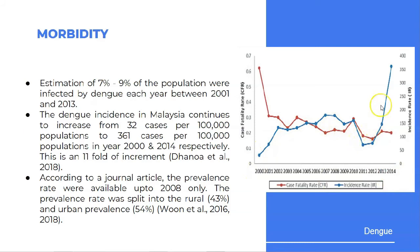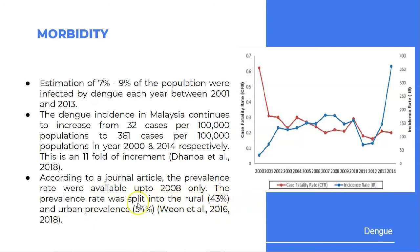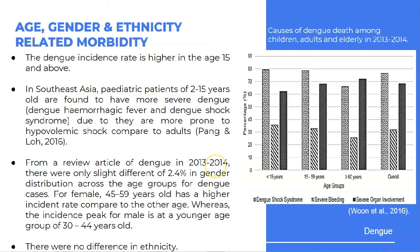There is an increment of at least 11-fold from the year 2000 until 2014. According to a journal article obtained from 2016 and 2018, the prevalence rate was available up to 2008 only. The prevalence rate was split into rural areas at 43% and urban prevalence at 54%. The age, gender, and ethnicity-related morbidity data follows.